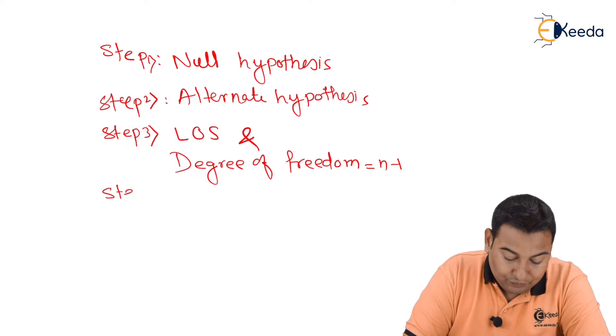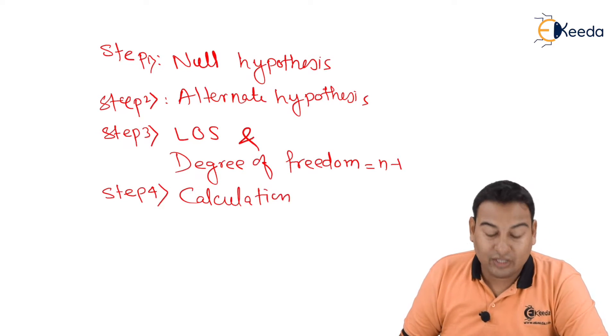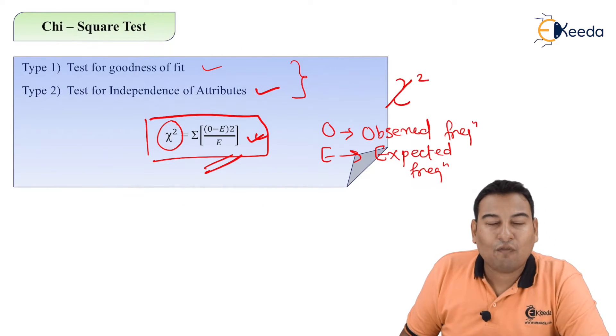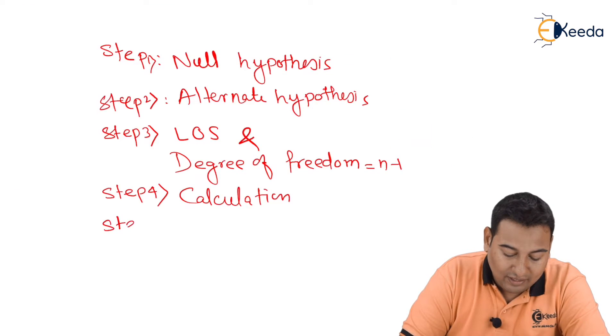Step number four is your calculation part, done by using the formula chi-square equals summation of (observed minus expected) whole square upon expected. Step number five is conclusion.